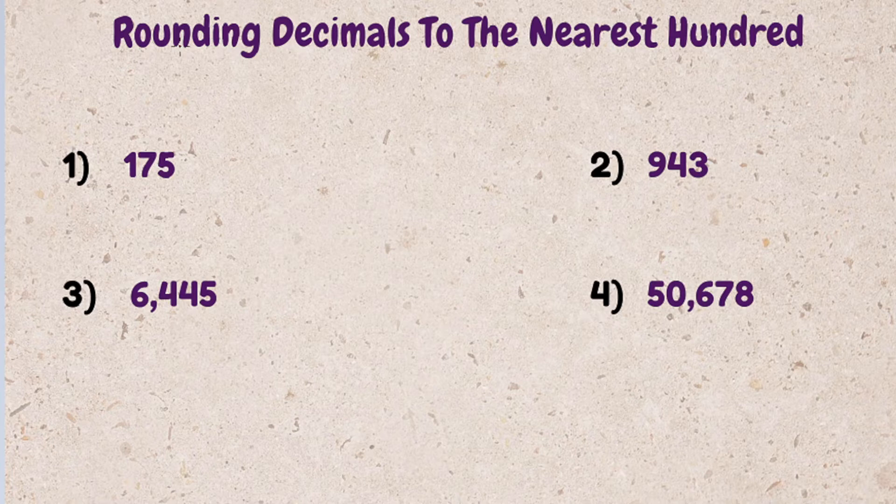If it's 5 or greater, the number in the hundred spot rounds up. If it's 4 or less, we round down, which pretty much just means it stays the same. I'll show you with a couple examples.